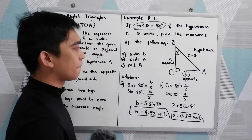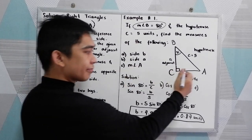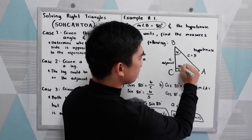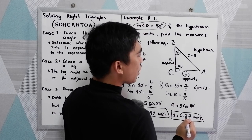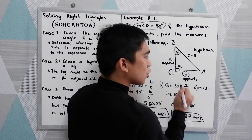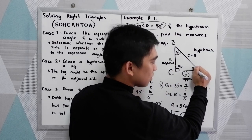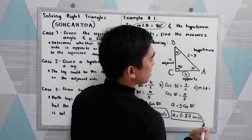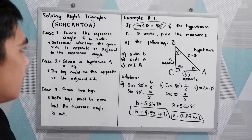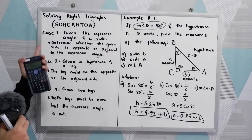Last, letter C: measure of angle A. You can solve this mentally. The sum total of angles in a right triangle is 180°, so 180 minus 90 is 90, minus 80 gives 10. So measure of angle A is 10 degrees. We're done answering example number 1, and that falls under case number 1.